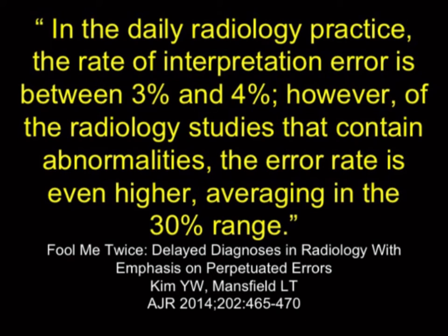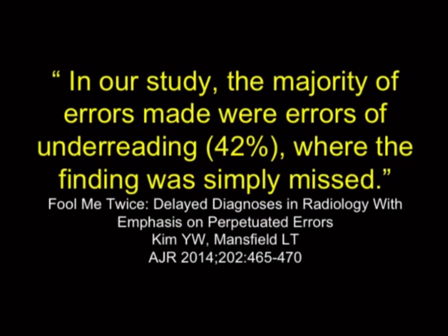The majority of errors were under-reading — the finding was simply missed. If you see a liver mass, you discuss whether it's a hemangioma, hepatoma, hepatic adenoma, or FNH. You try to go through differential diagnosis based on the findings, and at least you're in the ballpark. But if you don't see the liver mass, you're not in any ballpark.